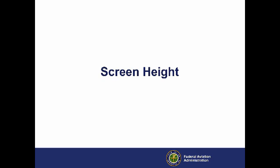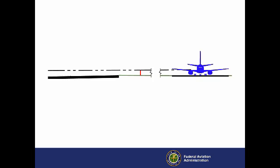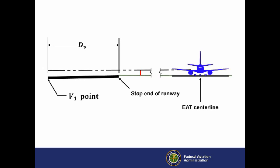Research shows that the visual screen must be high enough to hide the engine nacelle of an airplane on the EAT from the pilot's eye at the V1 point. This unscaled elevation view shows the stop end of the runway and the EAT centerline. The placement of the top of the EAT screen blocks the pilot's view of the nacelle of the airplane on the EAT.